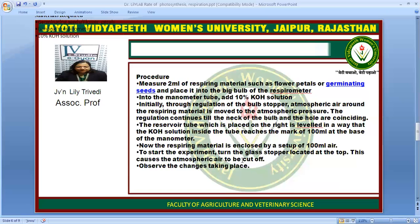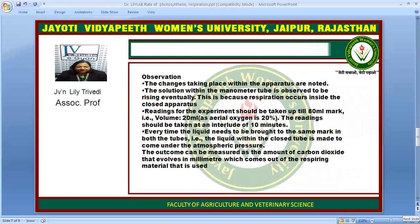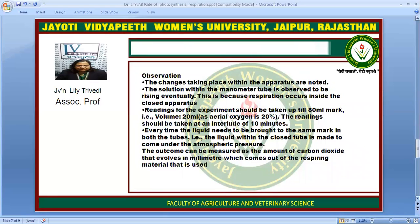Once atmospheric air is cut off, we observe what changes take place. The solution within the manometer tube is observed to be rising. This is because respiration is taking place inside the closed apparatus. The reading of the experiment should be marked at the 80 ml mark, since the volume of 20 ml represents the aerial oxygen at 20%. Readings should be taken at intervals of 10 minutes. Every time the liquid is brought to the same mark in both tubes, the liquid in the closed tube is brought under atmospheric pressure. This outcome is measured as the amount of carbon dioxide absorbed by the KOH solution from the respiring material.